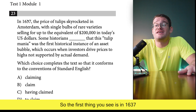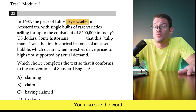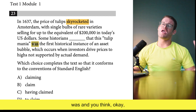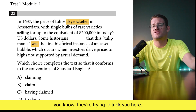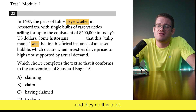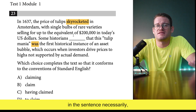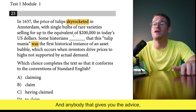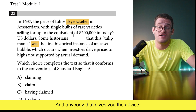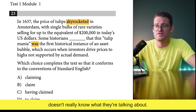The first thing you see is 'in 1637' and then you have the past tense verb 'skyrocketed.' You also see the word 'was' and you think okay, this must be past tense — but be careful, the SAT is trying to trick you here. Don't just look at other verbs in the sentence, because sentences don't need to have the same verb tense throughout.